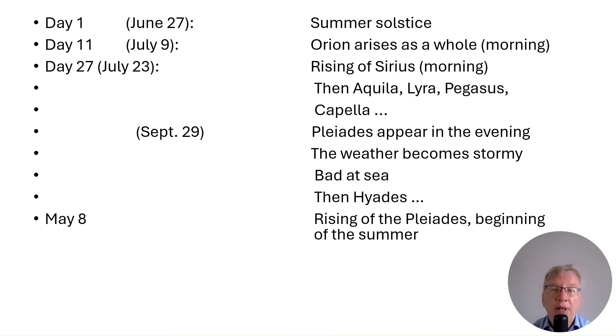In Works and Days, Hesiod tells the farmer to harvest when the Atlas-born Pleiades rise. The work is estimated to have been written around the 8th century BC. The ancient Greeks used the rising of important stars and constellations to date significant events in the calendar.